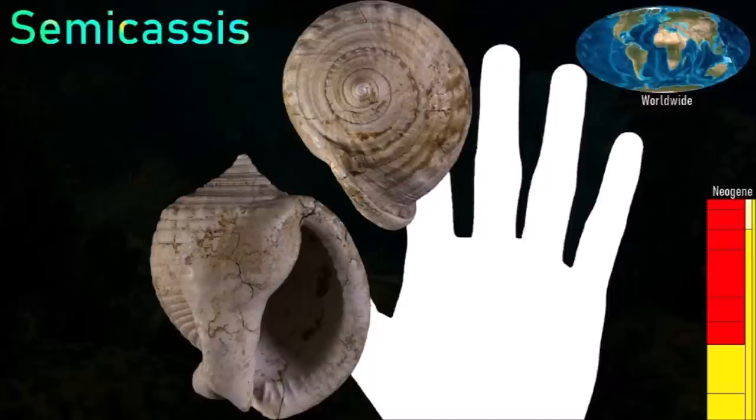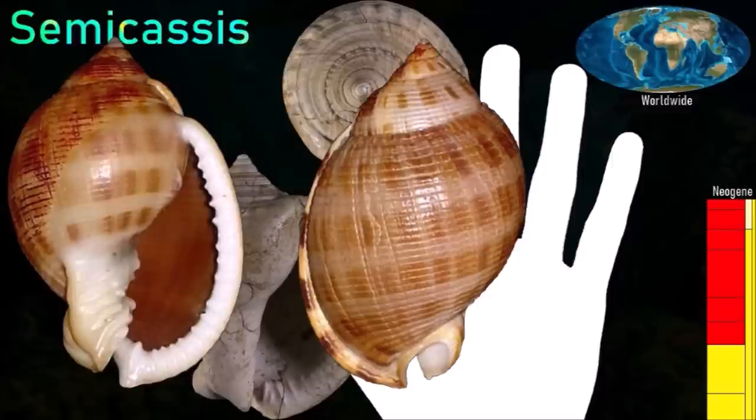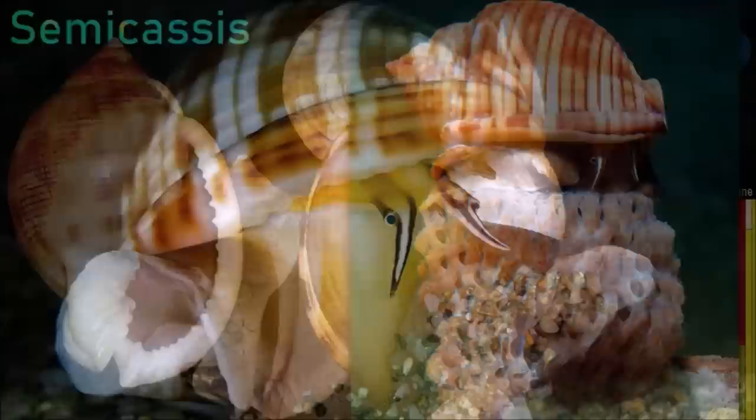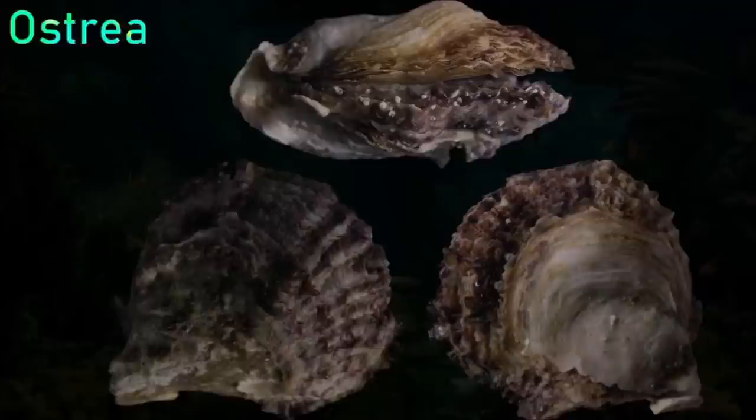The whorls of this gastropod are broad, with each one overlapping about three quarters of the following whorl. Some spiral ornamentation can be seen on the upper part of the outer whorl. The area surrounding the shell opening is called the mouth border, and there is a deep notch where the anterior inhalant siphon would have protruded to draw in water. Modern species of the genus are carnivores that feed on echinoids by boring into their shells with a tongue-like toothed radula.